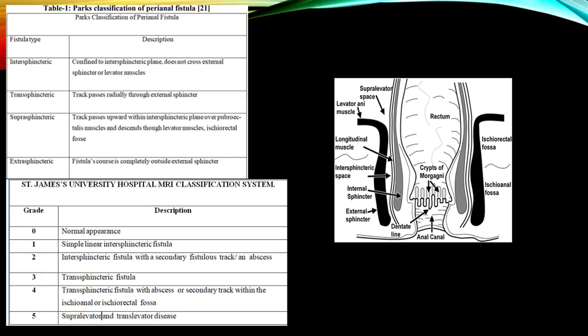Grade zero is normal appearance. Grade one is a simple linear intersphincteric fistula. Grade two is an intersphincteric fistula with secondary fistulous track and abscess. Grade three is a transsphincteric fistula. Grade four is a transsphincteric fistula with an abscess or secondary track within the ischioanal or ischiorectal fossa. Grade five is suprasphincteric and translevator disease.